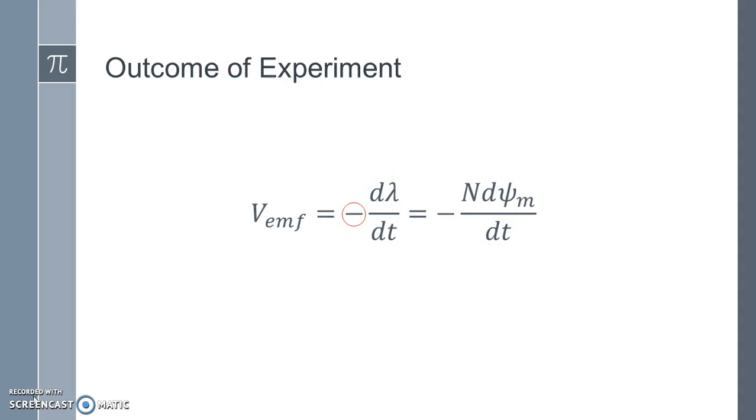...that the induced voltage or induced EMF is equal to n d phi m by dt, where phi m is the magnetic flux, d by dt is the time rate change, and n is the number of loops in the coil. Note here, a negative sign is introduced which indicates that the current produced by this process opposes its cause which produces it. This is conservation of energy.